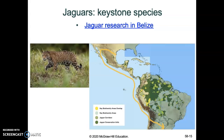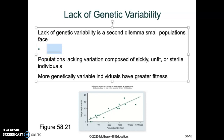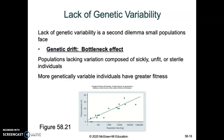As populations decline, we have huge concerns about genetic variability. When your population goes down — and this should connect back to evolution — the population starts going through genetic drift, specifically the bottleneck effect. You lose genetic diversity, which is not good. You lack genetic diversity and you're less likely to survive environmental changes and you have lower fitness. Even if you can rebound and rebuild the population, it may not recover because the genetic diversity isn't there.